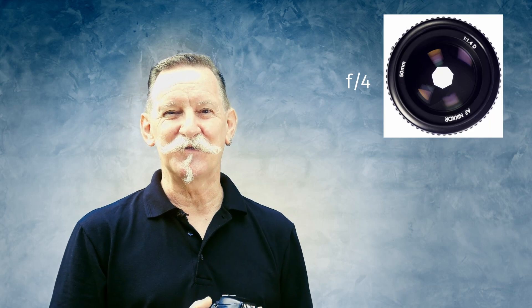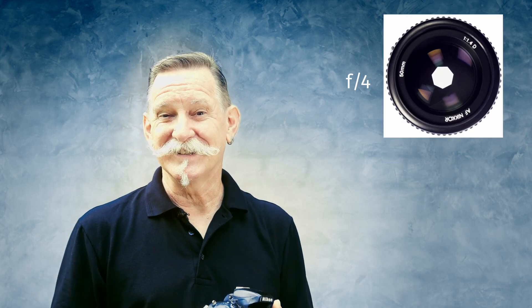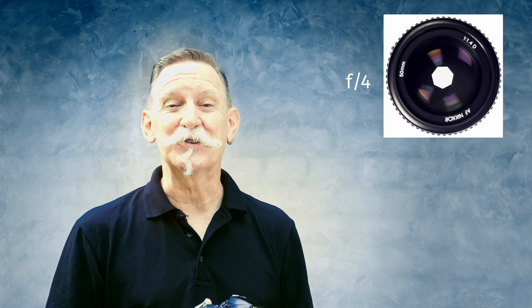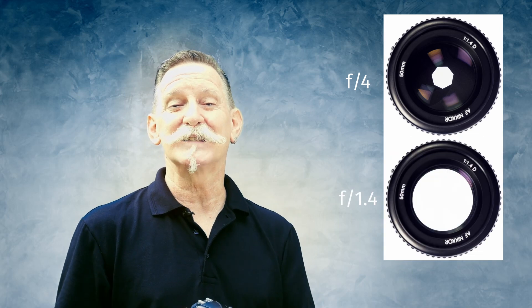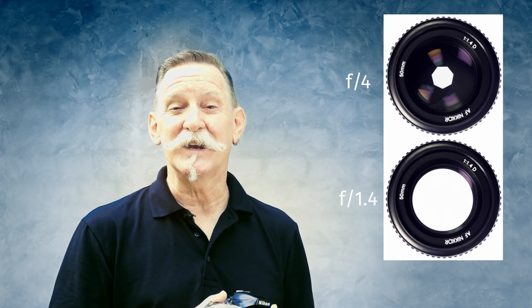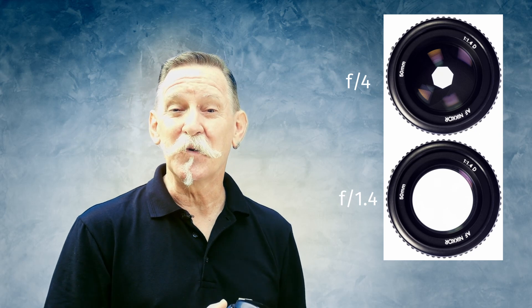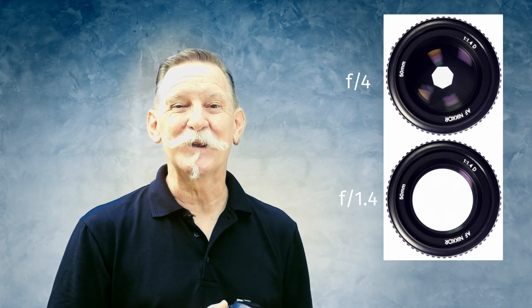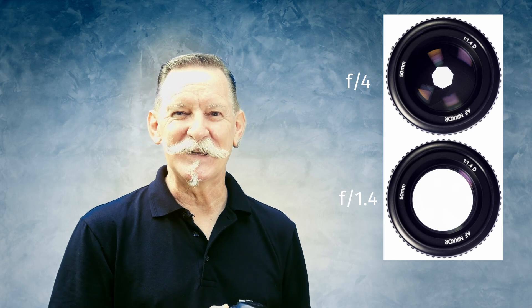On many lenses the smallest aperture setting you can choose is f22, sometimes a little bit higher. On a kit zoom lens the widest aperture might be about f3.5 or f4. On prime lenses — lenses that don't zoom — you'll usually have a wider maximum aperture, like on a 50mm which might be f1.8 or f1.4, sometimes even f1.2 or wider. A standard 50mm lens at f1.8 or f1.4 is a relatively inexpensive lens.